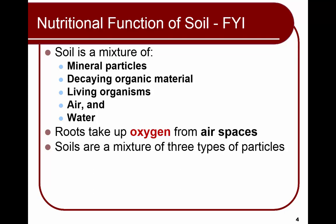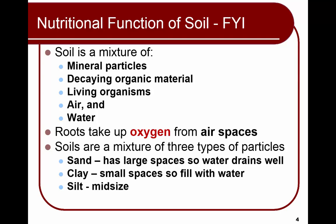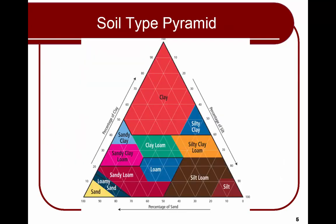There are three types of particles in our soil. Sand is the largest and has large spaces so water drains well. Clay has very small spaces, so it fills up with water and is more dense. Silt is a mid-size particle. Loam is roughly a third sand, a third clay, and a third silt — it retains water well, allows drainage, and is very productive. This soil texture pyramid shows the percentages of clay, silt, and sand that produce different soil types.